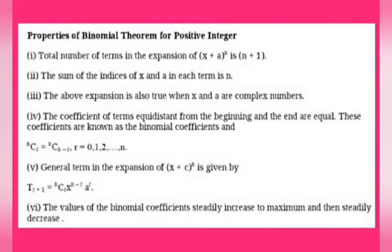Now let us study the properties of the binomial theorem for positive integer. Property number 1: the total number of terms in the expansion of x plus a power n is n plus 1. When you expand x plus a power n, you get x power n plus nc1 x power n minus 1 into a power 1, plus etc., plus ncr x power n minus r into a power r, which is the general term, plus etc., finally a power n, so you get total number of terms n plus 1.